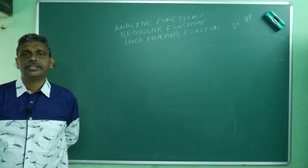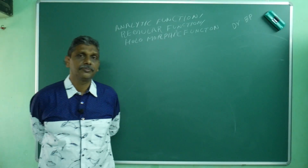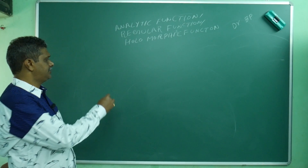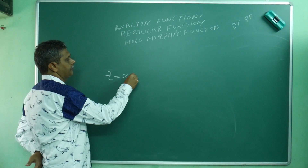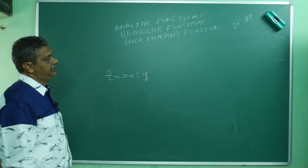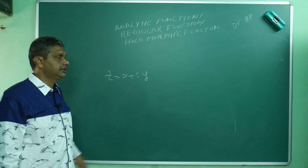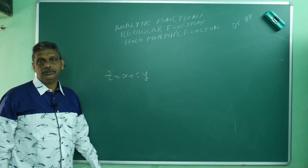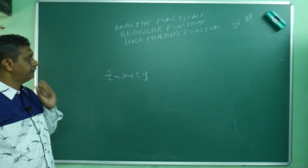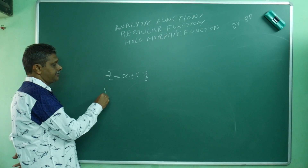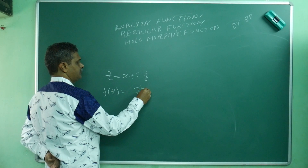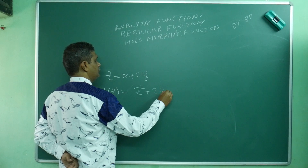Actually this deals with complex variables. When you go to complex variables, z is equal to x plus iy. In the complex plane, x is a real number and y is an imaginary number. Now, the function — how they define f of z — f of z may be something like z squared plus 2z plus 3.